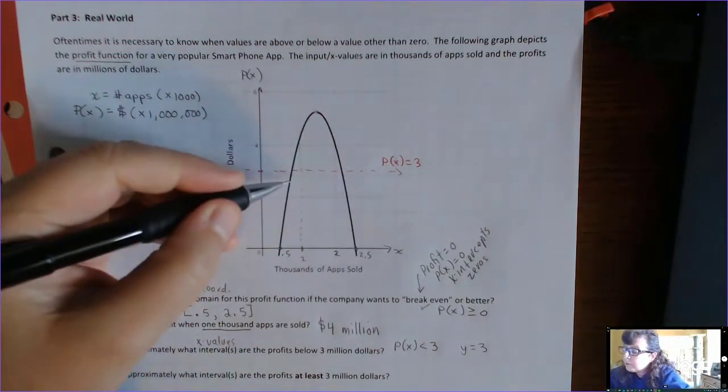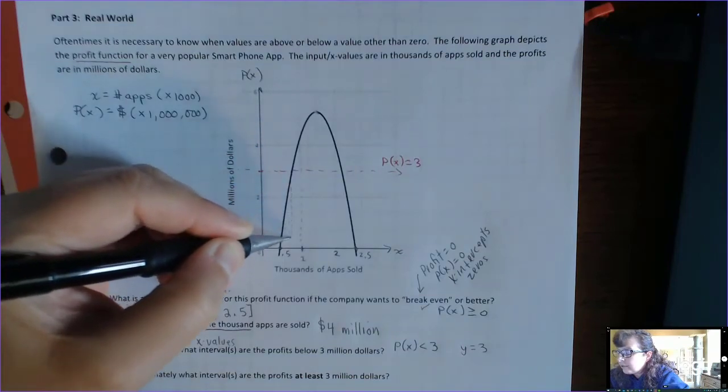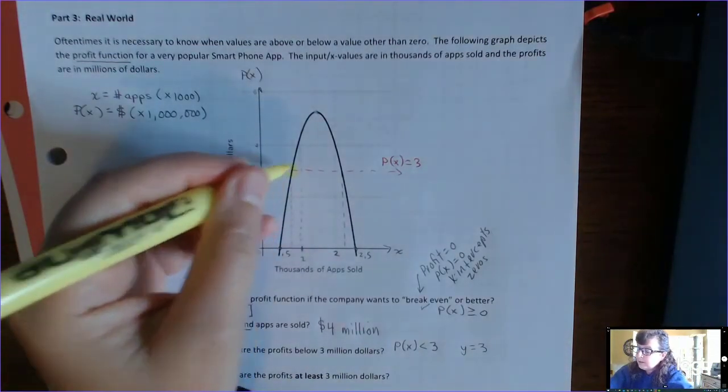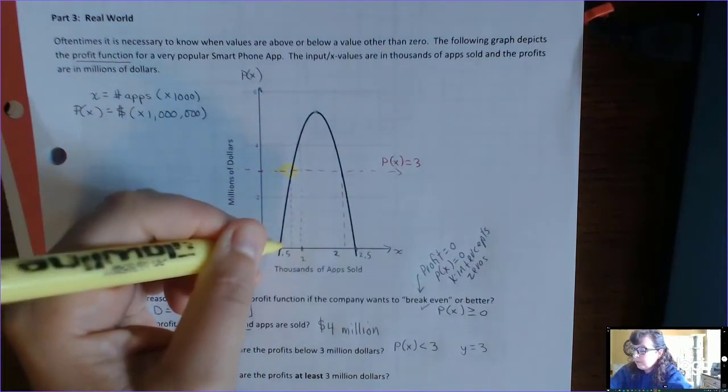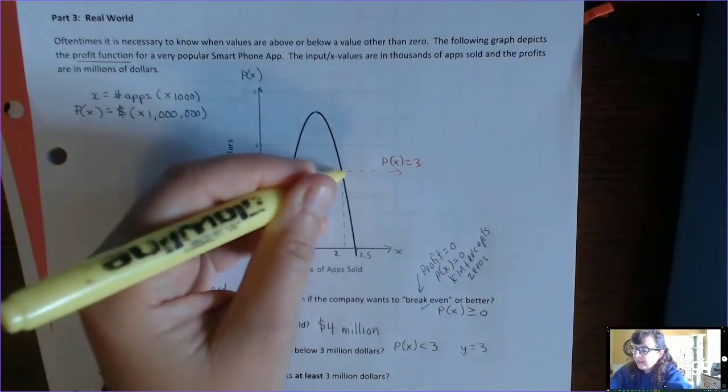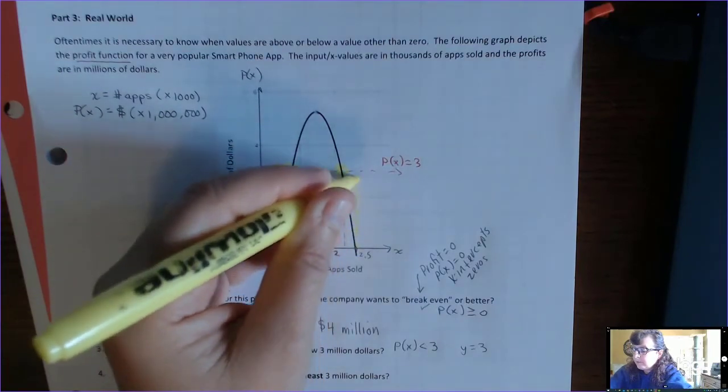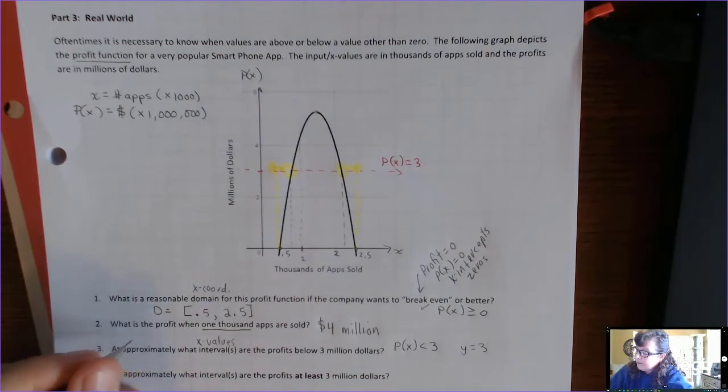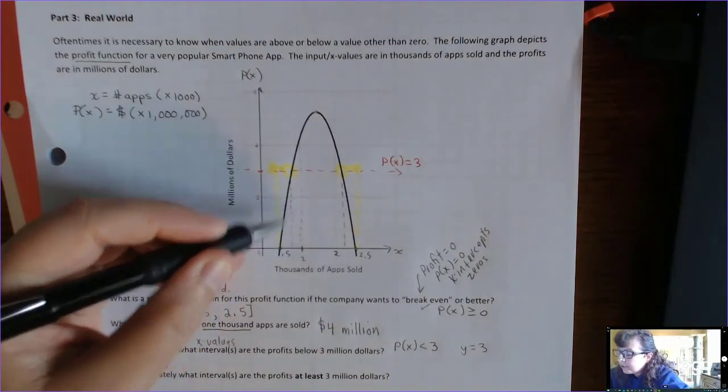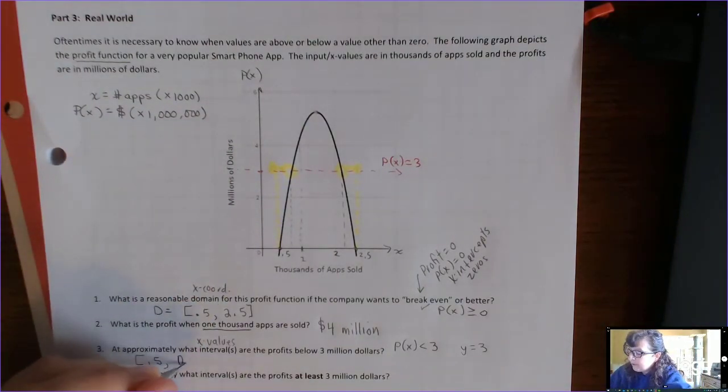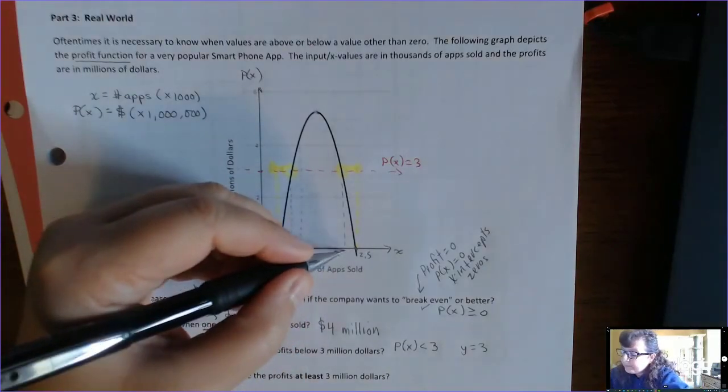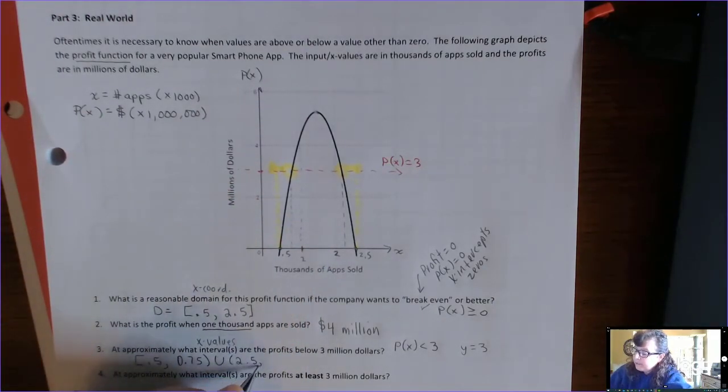And we want to know when it's below, so we have to kind of go down here and find this x value, because it's below 3 right here, and we can't go all the way over. Remember the domain that we said we were going to stop at is right there, and it's below, this is where we're stopping here. Okay. So, it's below 3 million dollars when x is bracket 0.5 comma, and we're going to estimate that value as maybe 1.75, 0.75. But we have to say parentheses, because we want it to know when it's below 3 million dollars, so not when it is equal to 3 million dollars. And then it also happens, let's say 2.25 to the end of the domain, which is 2.5.